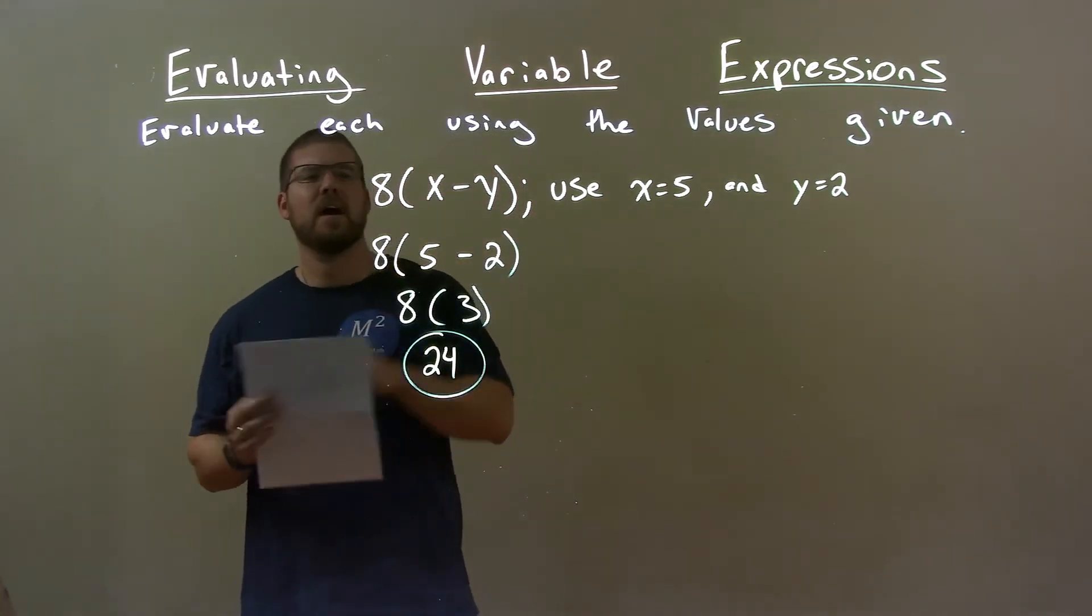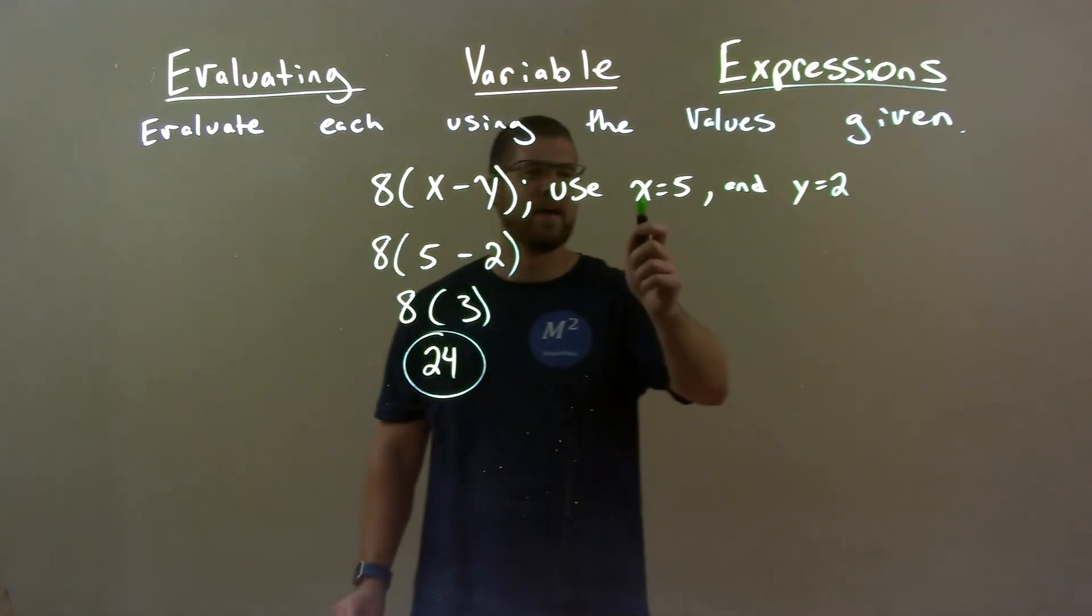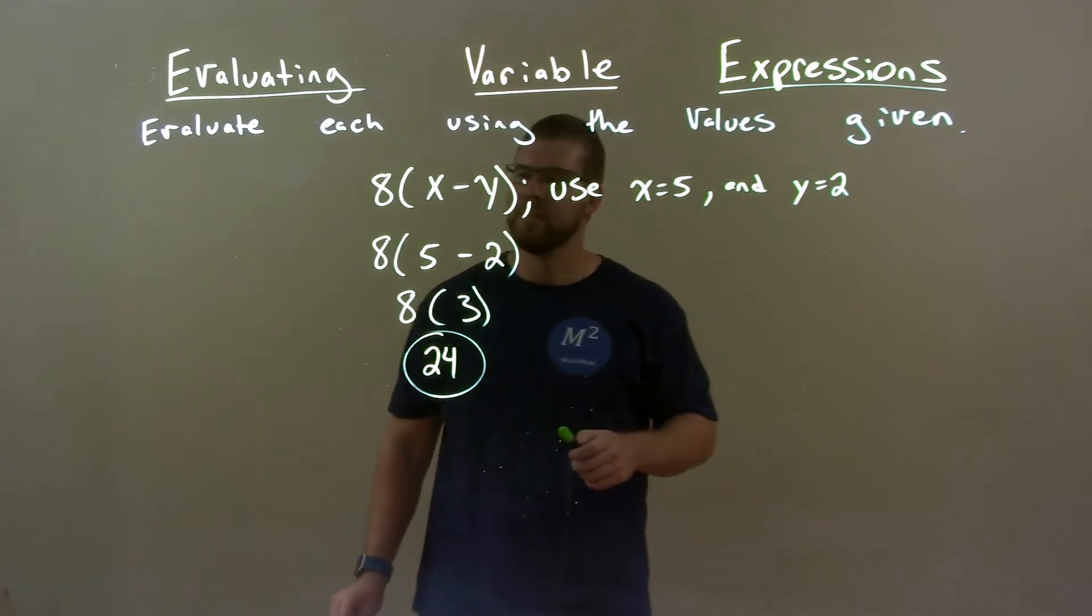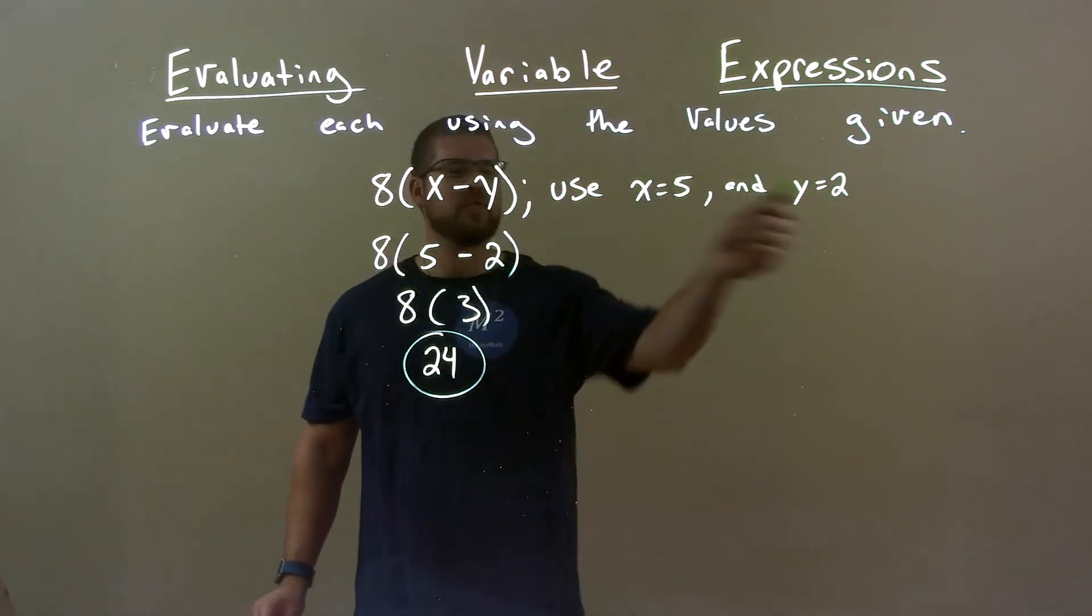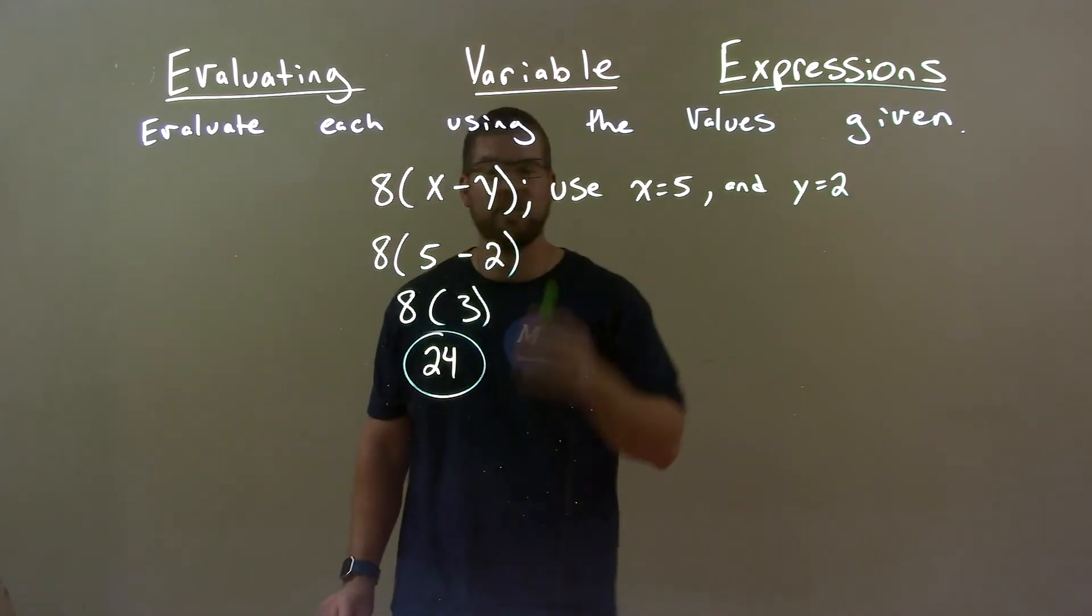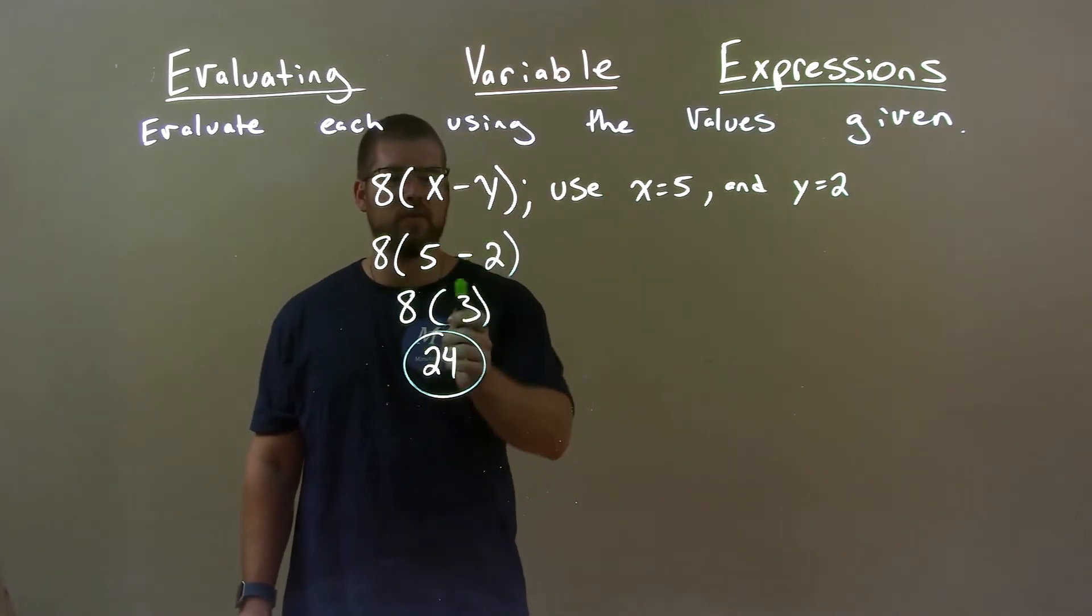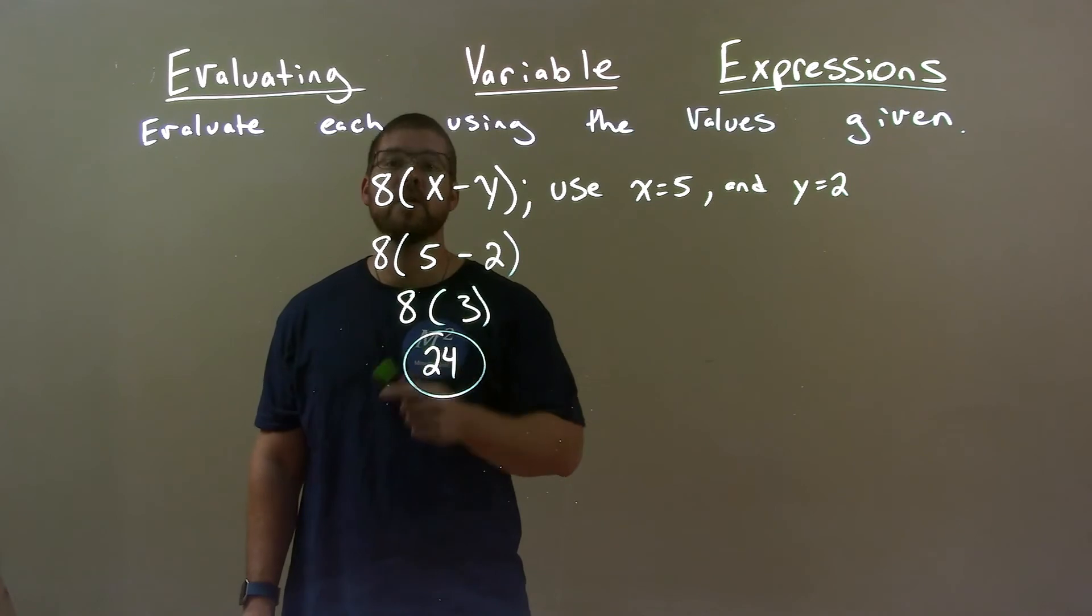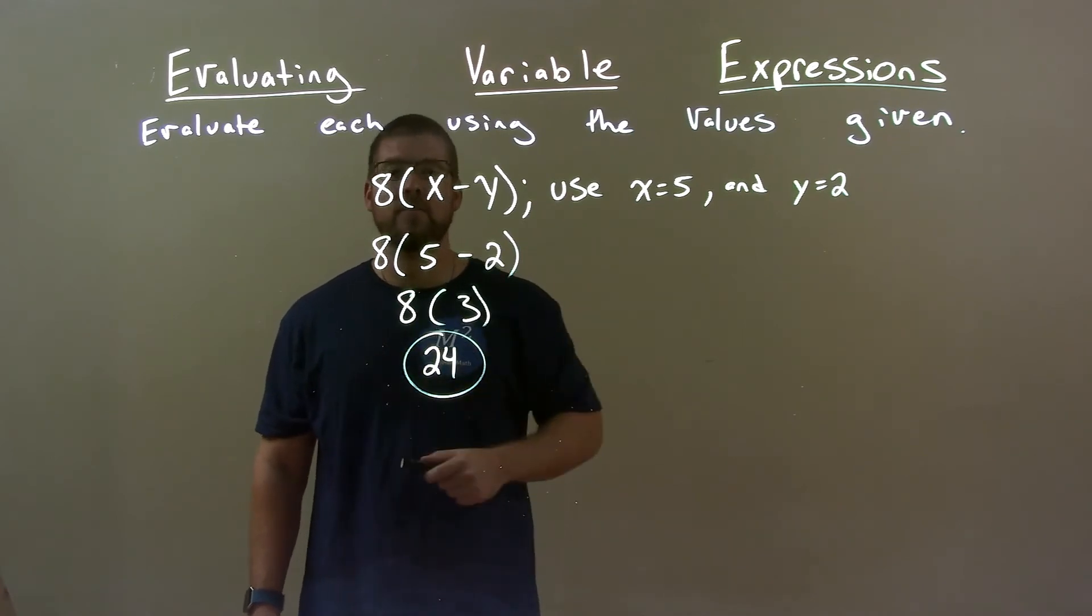Quick recap. We're given 8 times x minus y and we're using x is 5 and y is 2. 5 for x, 2 for y. Now we have 8 times 5 minus 2 and it's just simplification. 5 minus 2 is 3. 8 times 3 is 24. And so there is our final answer.